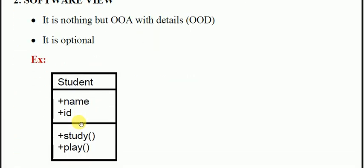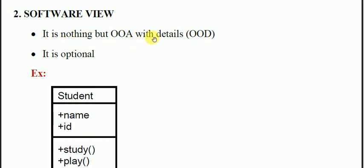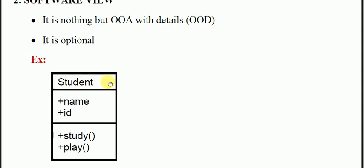Then you have the software view. In the software view, it is nothing but object-oriented analysis with details, object-oriented design. It is optional, it is also not that much compulsory. We have three types of views. Now you can see it is the software view. In the software view we have three things: the name, we have given the name and the ID. Here we use the plus and minus, this is the private, protected, and public. So plus name, plus ID, study is the method. Name and ID are attributes, student is the name, study and play are the operations. These are the three components and partitions. This is the software view of a class.